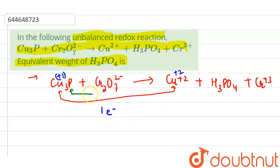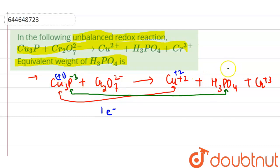Phosphorus is oxidized from minus three oxidation state to plus five oxidation state. So the change in electrons for phosphorus is eight electrons.